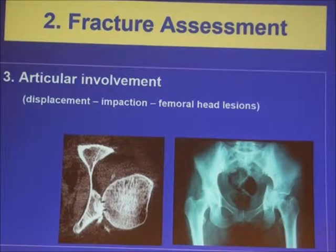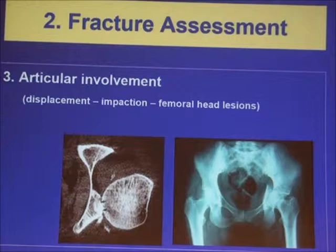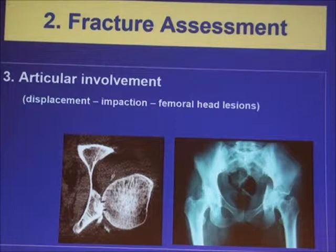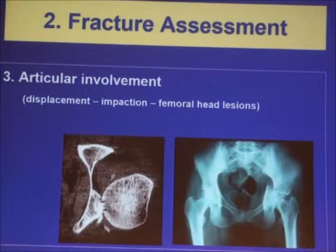The third parameter in fracture assessment is articular involvement. Is the fracture displaced or not? As with any intra-articular fracture, any displacement of the joint is not accepted — there is no acceptance for a step inside the joint. Second, we must assess the roof impaction when planning surgery. Third, assess the associated femoral head lesions.